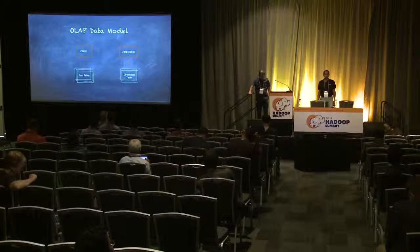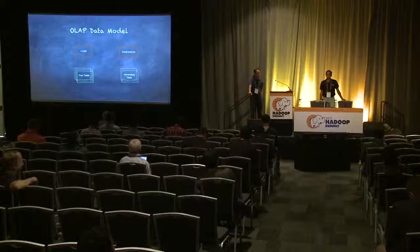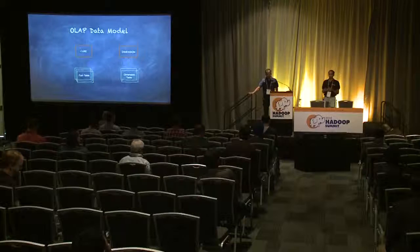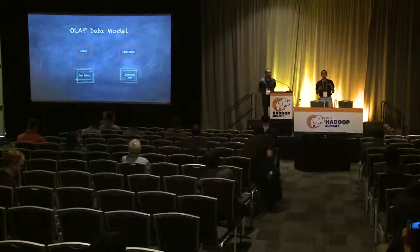Before that, let's correct some basic terminology. Lens provides a cube OLAP abstraction. In the OLAP world, we have things called cubes and dimensions. Cubes are the logical interfaces against which people query — there need not be any physical storage directly attached to a cube. Cubes are the only interfaces for querying.